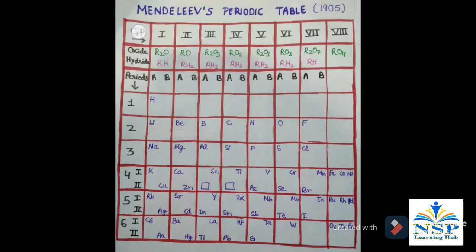There are eight groups indicated by Roman numerals and the elements belonging to the first seven groups have been divided into subgroups A and B on the basis of similarities in the properties. Group eight consists of nine elements which are arranged in the form of three triads.